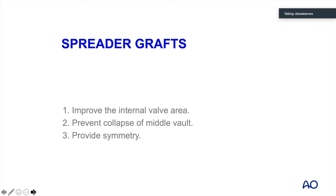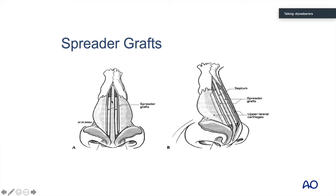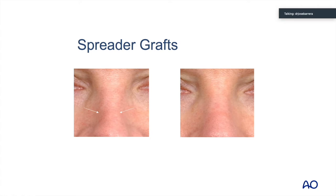Spreader grafting is a specific technique utilized to improve the internal valve area. It helps prevent middle vault collapse and provides some symmetry. A spreader graft can be placed after osteotomies to improve the internal valve. Although the name implies spreading the nasal dorsum, it does not need to be unaesthetic — it does not significantly widen the nose unless intended. The size and shape are determined by the anatomy of the patient and what is needed, whether using septal, rib, or auricular cartilage.